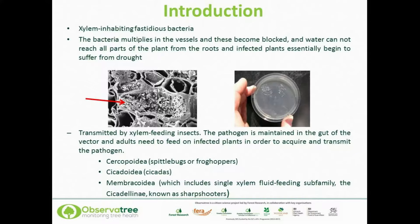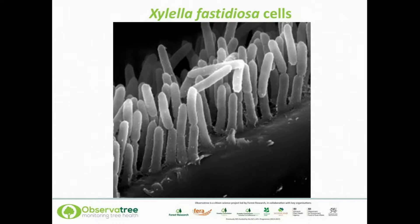The bacterium also secretes hydrolytic enzymes that exacerbate the scorch symptoms. Xylella fastidiosa is very slow growing and has fastidious nutritional requirements, which make isolation very difficult. You should be able to see some Xylella fastidiosa all lined up in rows. It's found only in the xylem vessels of plants. As seen in this electron micrograph, the bacterium has sticky ends created through the production of molecules called adhesins. The bacteria stick together and form biofilms, both in the xylem of the plant and in the foregut of the vector.